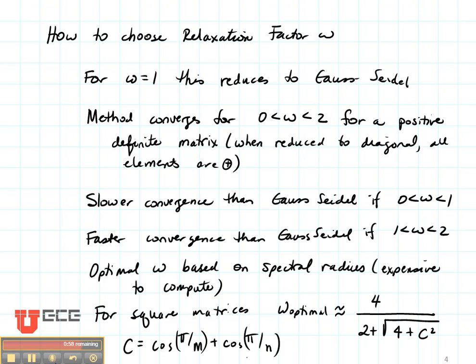Now one of the big questions is how to define omega in order to get good relaxation. We can see that for omega equals 1 this method reduces to the Gauss-Seidel method. The method converges for omega between 0 and 2. If omega is less than or equal to 0, or omega is 2 or greater, it does not converge.